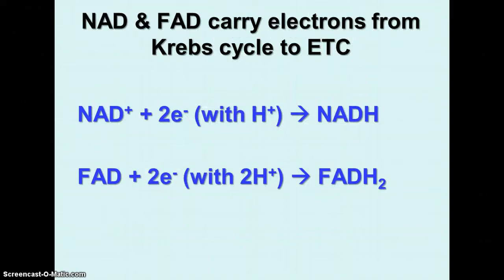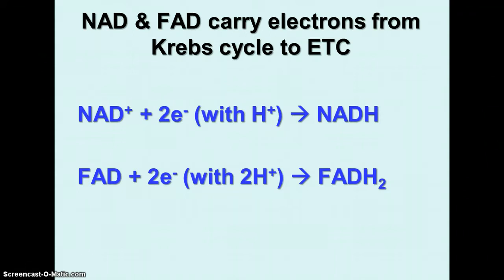NAD and FAD carry electrons from the Krebs cycle and glycolysis to the electron transport chain. NAD, when it doesn't have electrons, is called NAD+, and it can carry two electrons with one proton in the form of NADH. FAD can carry two electrons with two hydrogen ions — two protons — and becomes FADH2. When you see NAD+ or FAD, they're not carrying electrons. When you see NADH or FADH2, they are carrying electrons and heading to the electron transport chain to produce most of the ATP.